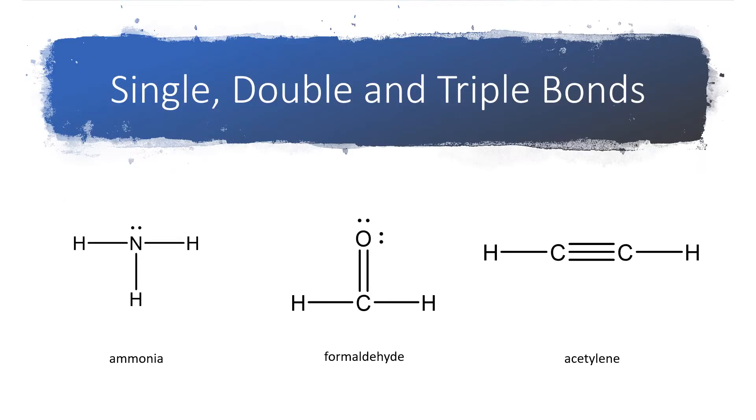When we start sticking these puzzle pieces together, we end up with structures that look something like this. Anytime we draw a line, a line represents a shared pair of electrons. So it's also perfectly fine to draw that as two dots instead of one line. The line represents a bond. Two dots would represent a shared pair. A shared pair of electrons makes a covalent bond. So two dots, one line, they are equivalent.